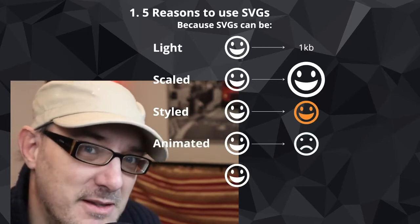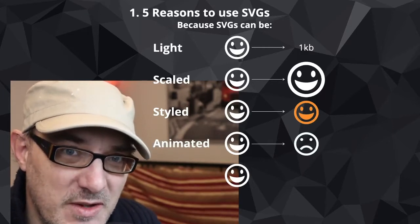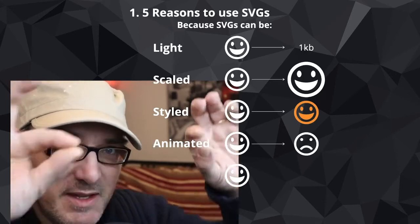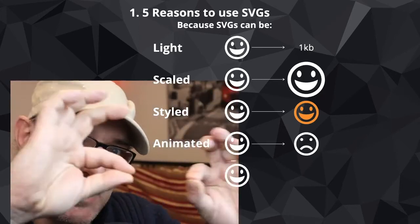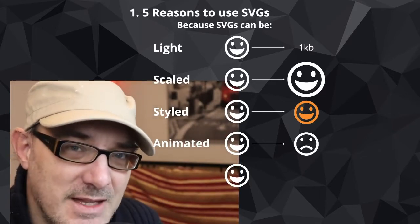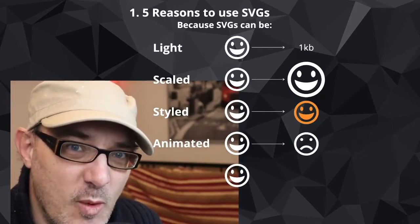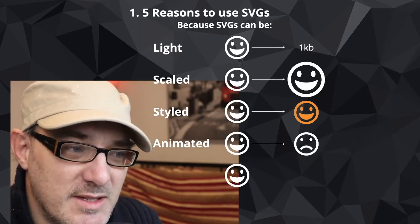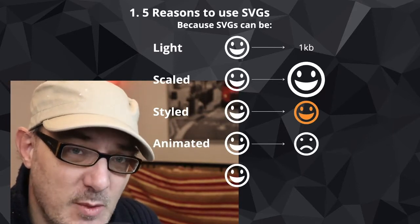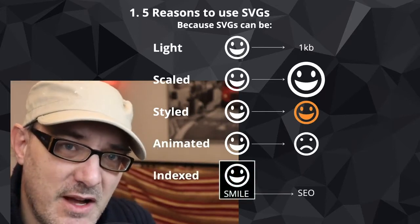SVG files can also be animated. Because of their logical structure, we can say: this part here, we can change its length, we can change its curvature, we can turn this on. This allows us to animate SVG files in a way that is not possible with PNG files, and which is also lightweight.